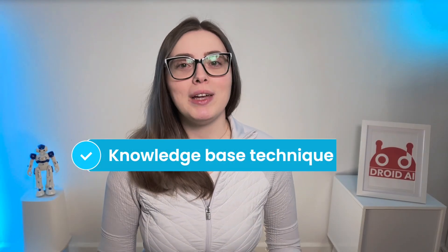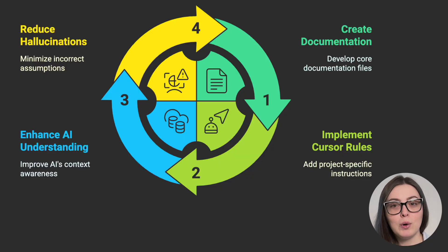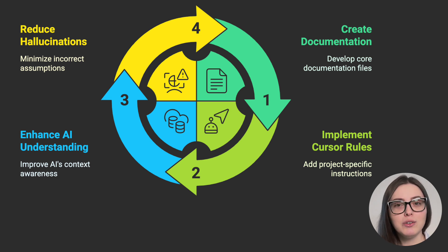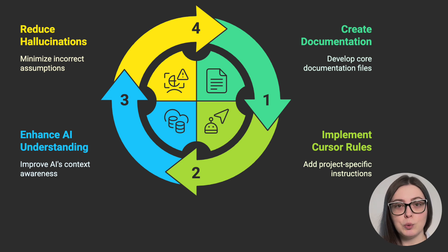Tip number one is the knowledge-based technique with cursor rules that will reduce AI hallucinations. Hallucinations happen when the agent doesn't have enough context and is making certain assumptions that are not correct. To improve this, most efficient developers are building structured knowledge bases that transform how cursor understands their projects. Here is how it works: we create a set of core documentation files that serve as a knowledge base for cursor's AI models, with the most important being the cursor rules file.